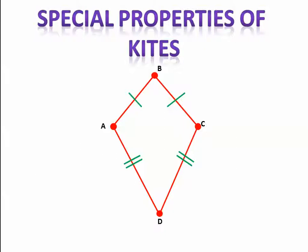Not all quadrilaterals are parallelograms — we already learned that when we studied trapezoids, because they're a quadrilateral but not a parallelogram. Another figure known as a kite is not a parallelogram either, though it's a special type of quadrilateral. A kite is a quadrilateral with two pairs of congruent sides but with no sides parallel. AB is congruent to BC, and segment AD is congruent to segment CD, but nobody's parallel to anybody. That's why it's not a parallelogram.